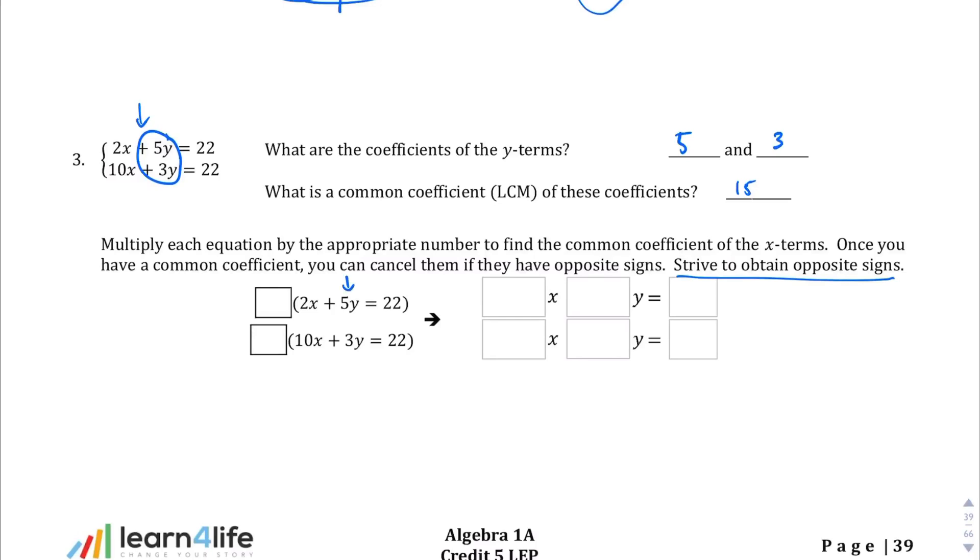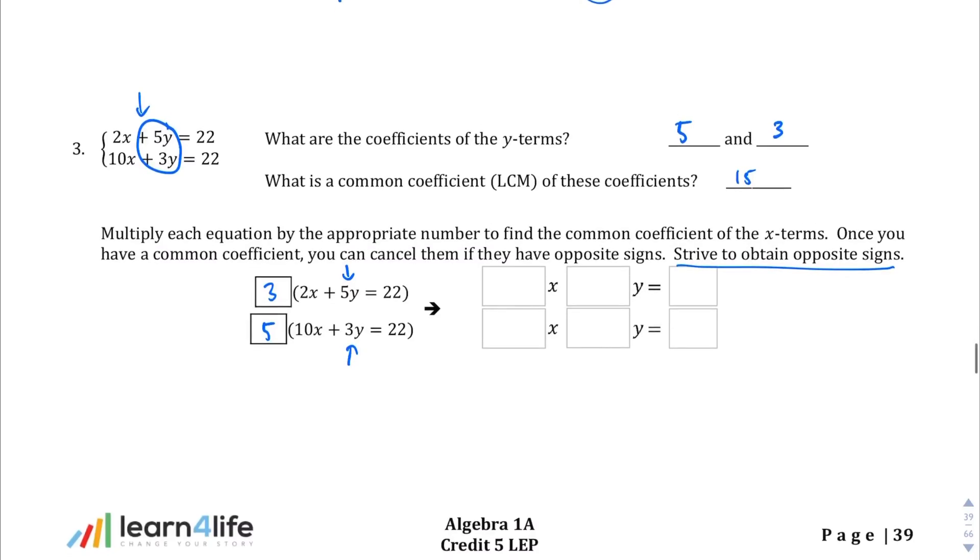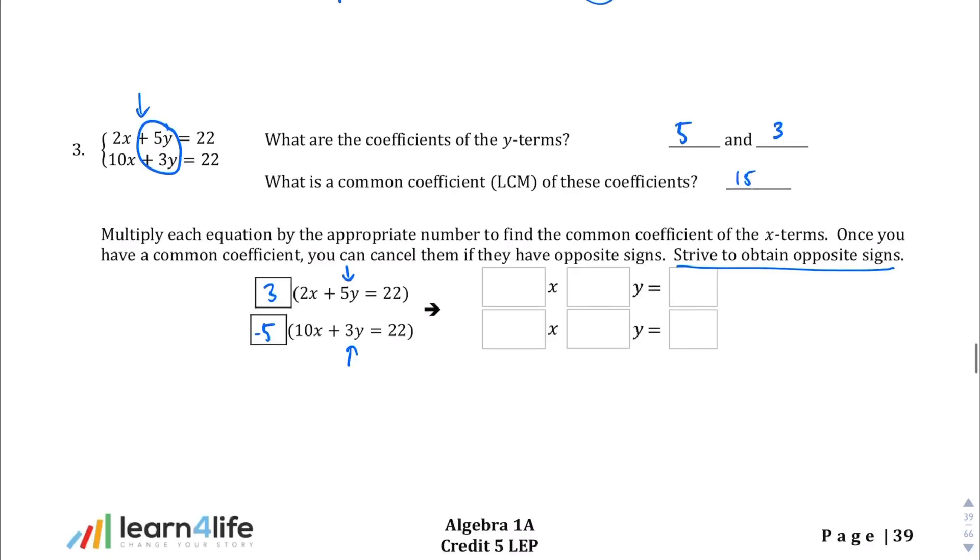So let's think about this. What do you multiply with 5 to get 15? Well, 3. And what do you multiply with 3 to get 15? Well, 5. And so before we start distributing, we want these to have opposite signs. So what that means is I want one of them to become negative. And you can make either one negative. It doesn't really matter. So you can make the 3 negative, or you can make the 5 negative. It's really your choice. I'm going to go ahead and just, I'm going to go with a negative 5, just by random chance. But you'll see what I mean in a second. I'm going to distribute that 3. 3 times 2x is 6x. 3 times 5y is 15y. 3 times 22 is 66.